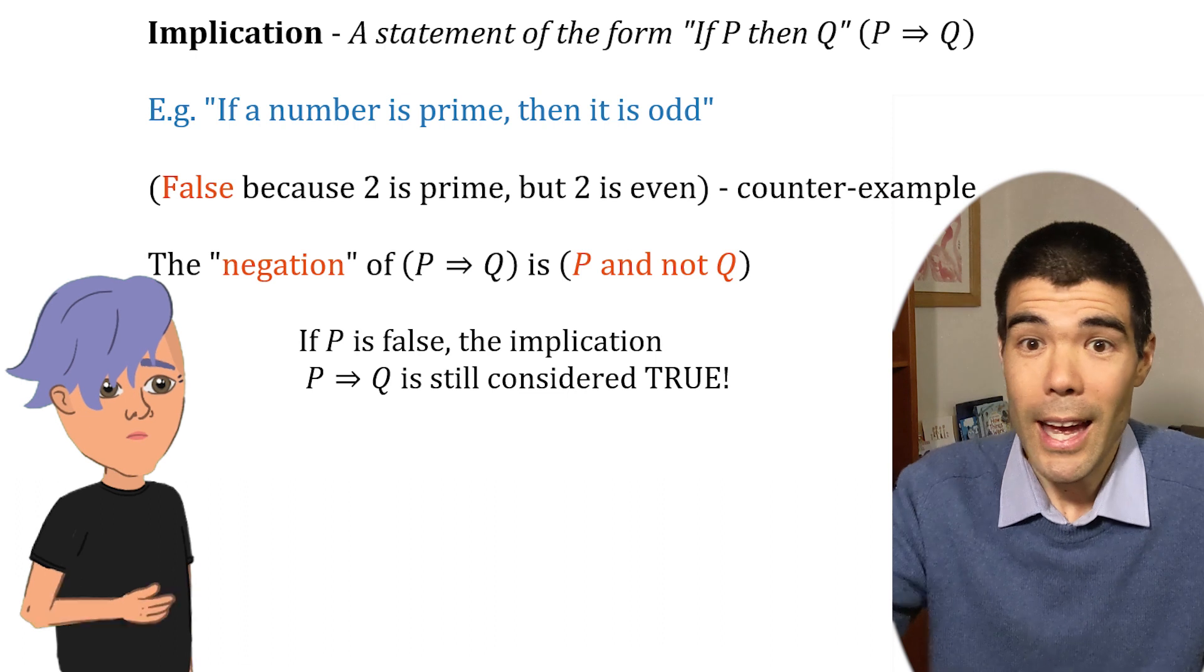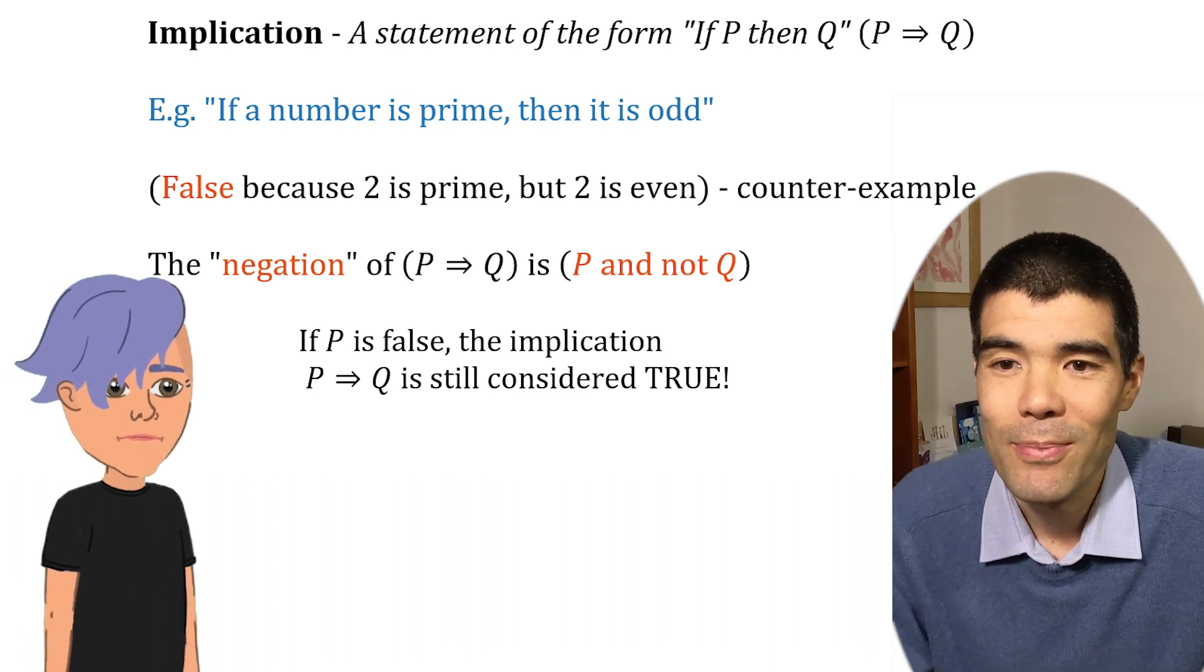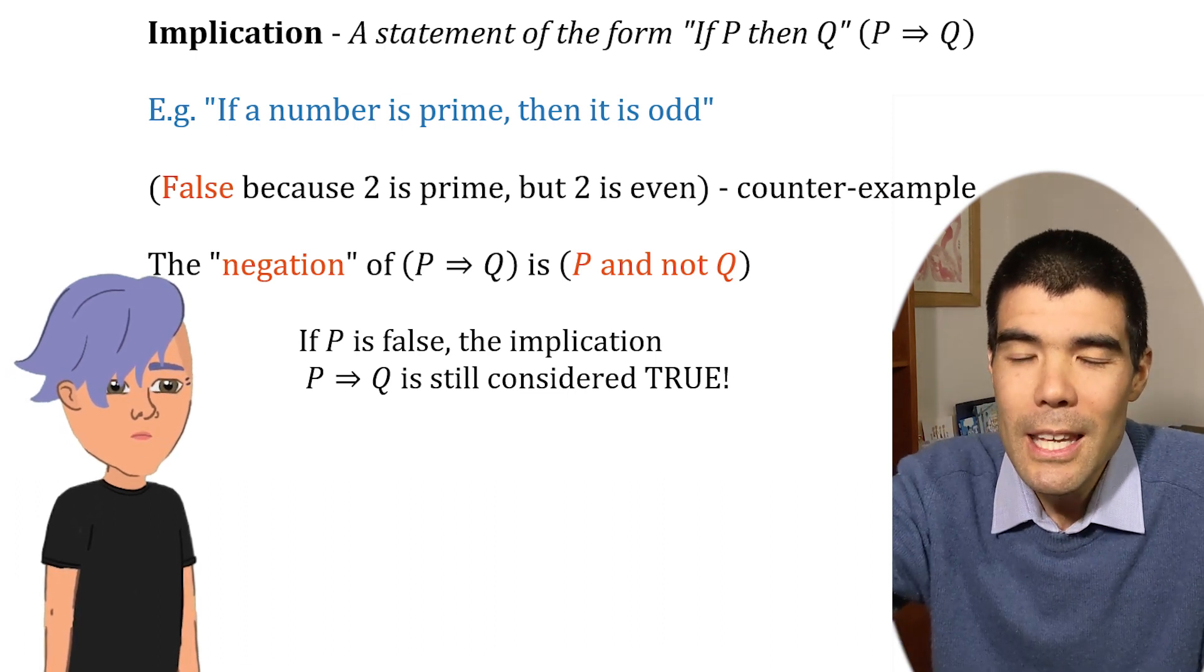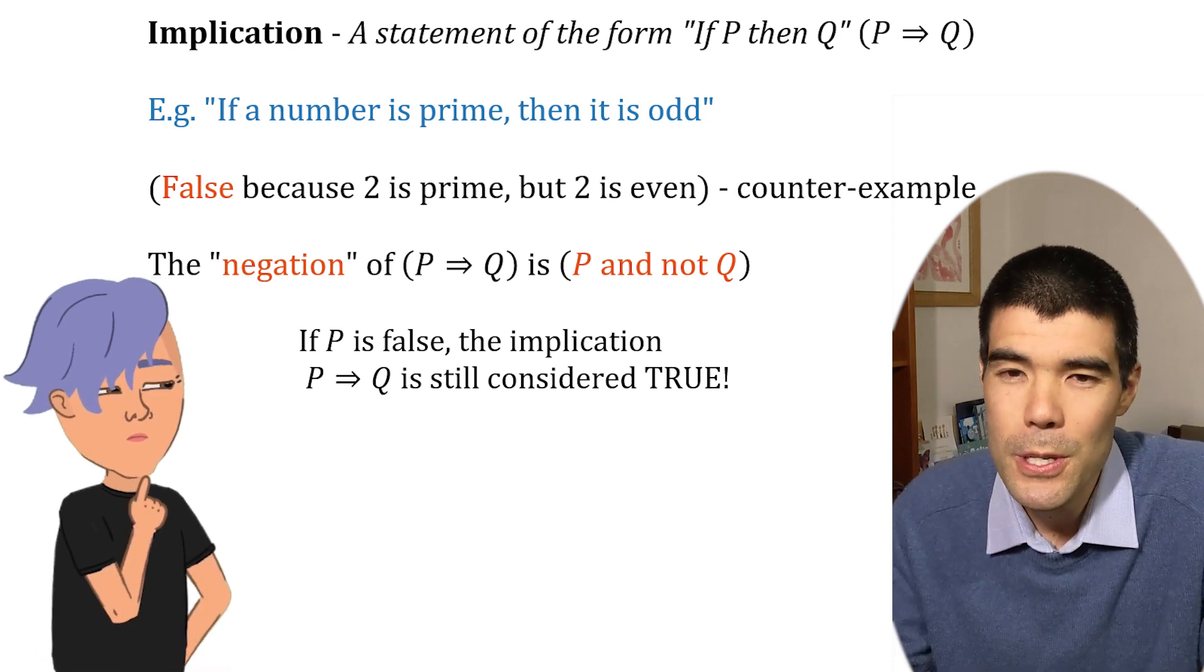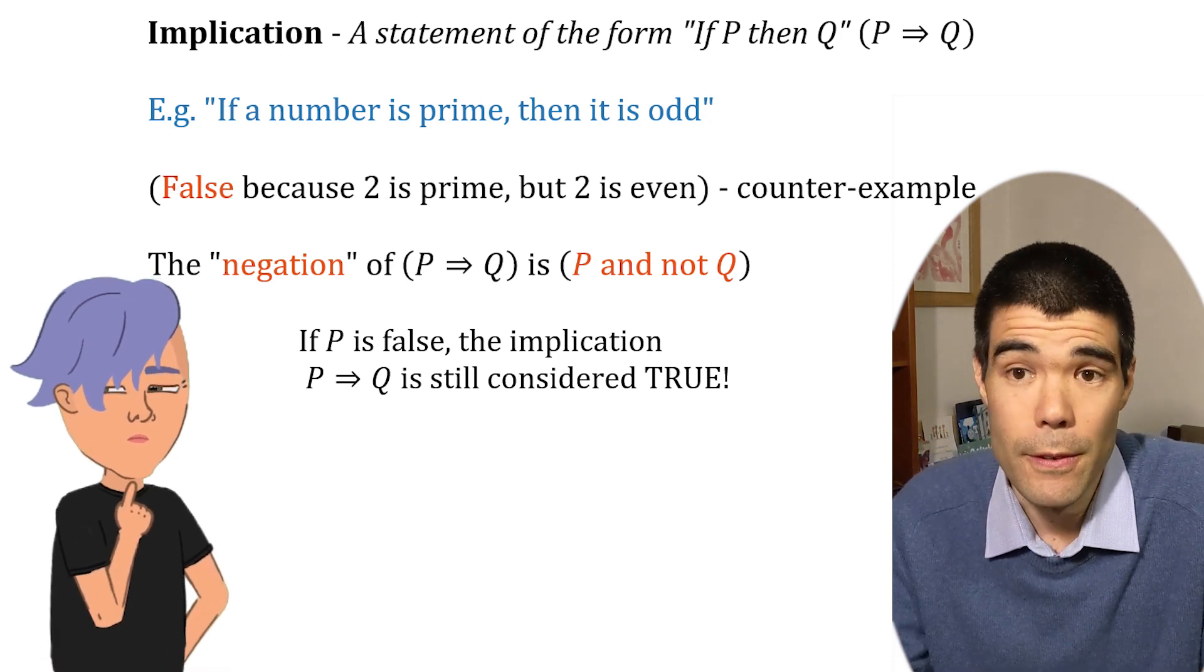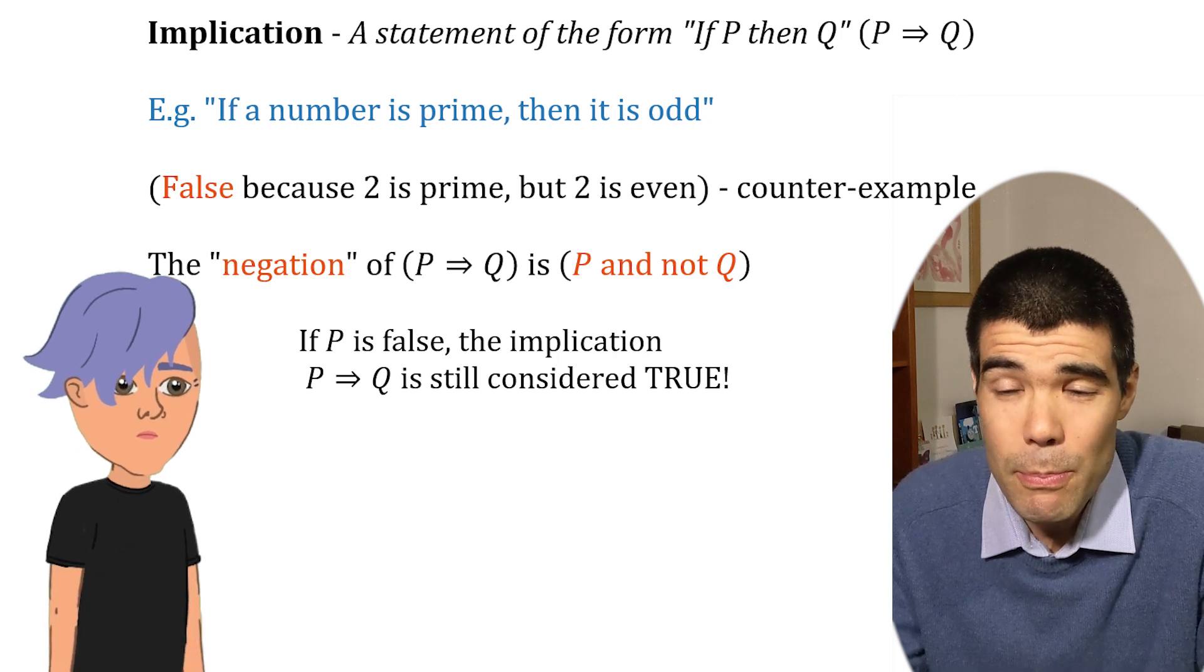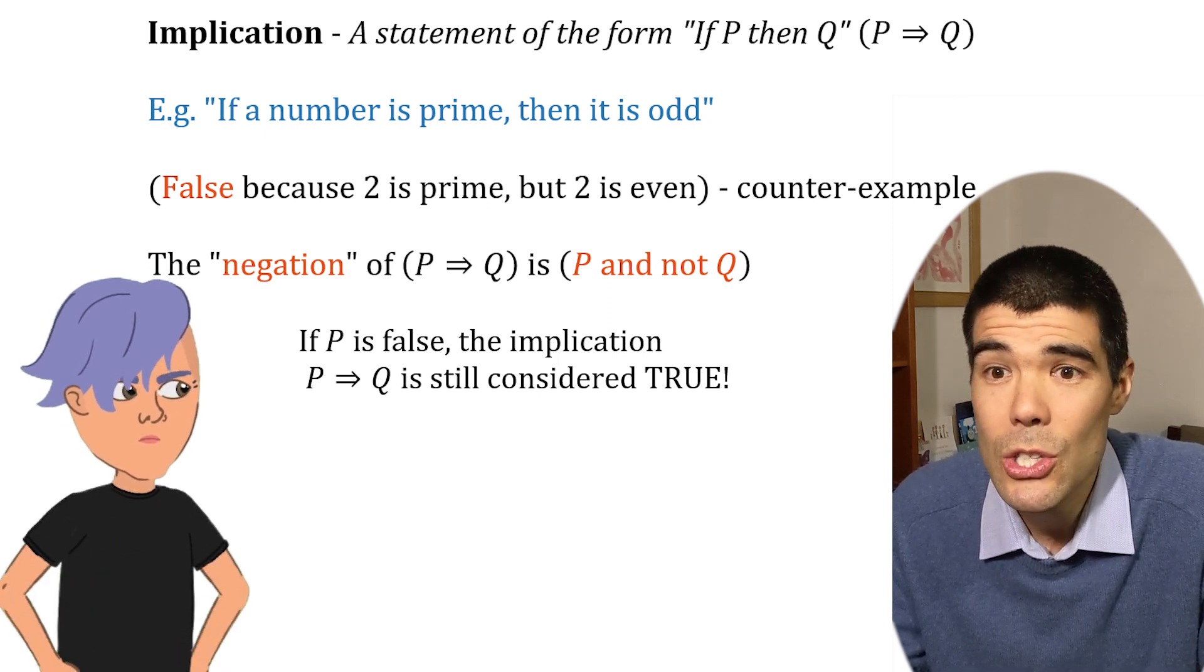But my name's not Billie Jean. And my name's not Michael. So the statement is double wrong. Well, it's an if-then statement, so it only matters what happens if the first part is true. If the first part is false, there's no way to disprove the implication so we say it's true.